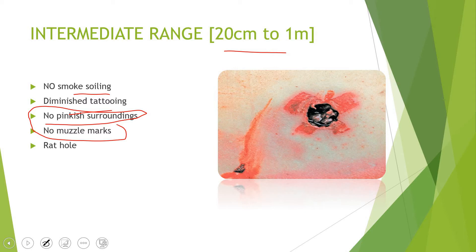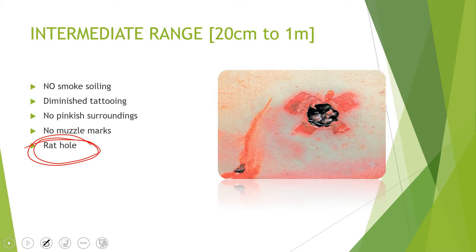The important concept to take home is the rat hole phenomenon. The rat hole refers to the concept that the spread of shot will begin, first causing an irregular rim of the wound. Additionally, injuries removed from the central wound may also be seen.